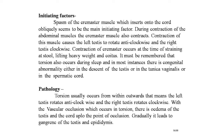Torsion also occurs during sleep, and in most instances there is a congenital abnormality in the descent of the testis, the tunica vaginalis, or the spermatic cord. In pathology, torsion usually occurs from within outward — the left testis rotates anti-clockwise and the right clockwise. With vascular occlusion, there is edema of the testis and cord up to the point of occlusion, gradually leading to gangrene of the testis and epididymis.